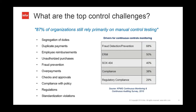Some of the top control challenges we face include segregation of duties — making sure different people are involved in every process to maintain checks and balances. Other challenges include preventing duplicate information, ensuring employees are properly reimbursed, making sure purchases go through proper requisition processes, and various fraud prevention methodologies. There are also overpayments, approvals, and issues with electronic funds transfer, where it's just bits and bytes moving down a wire with no paper trail. Various regulatory issues and SEC requirements, along with other standards violations, round out the key concerns.